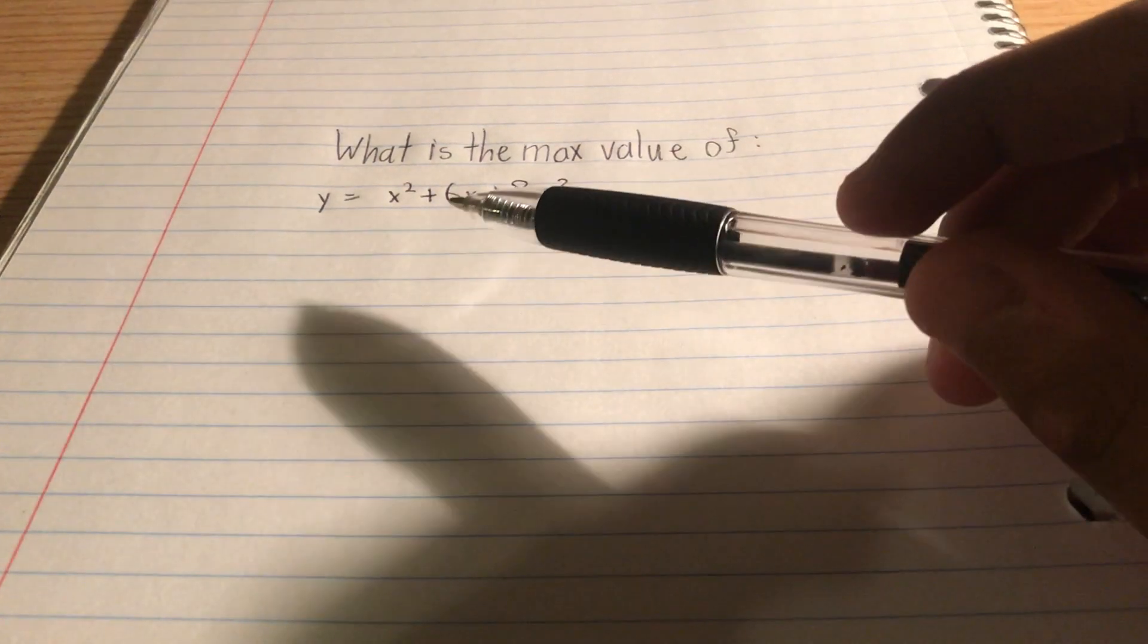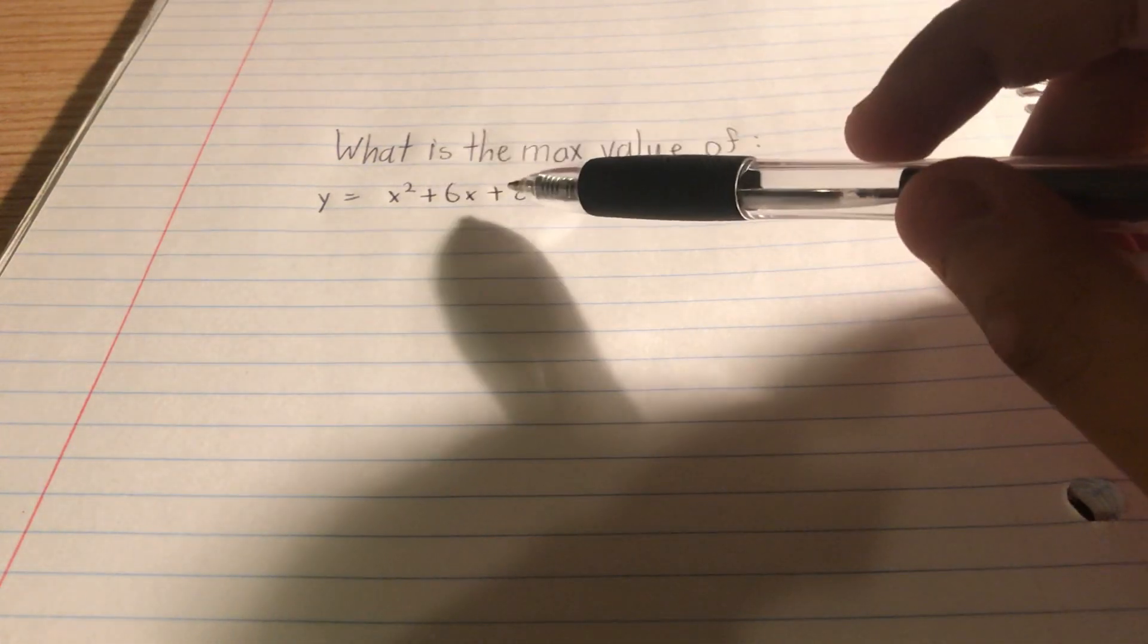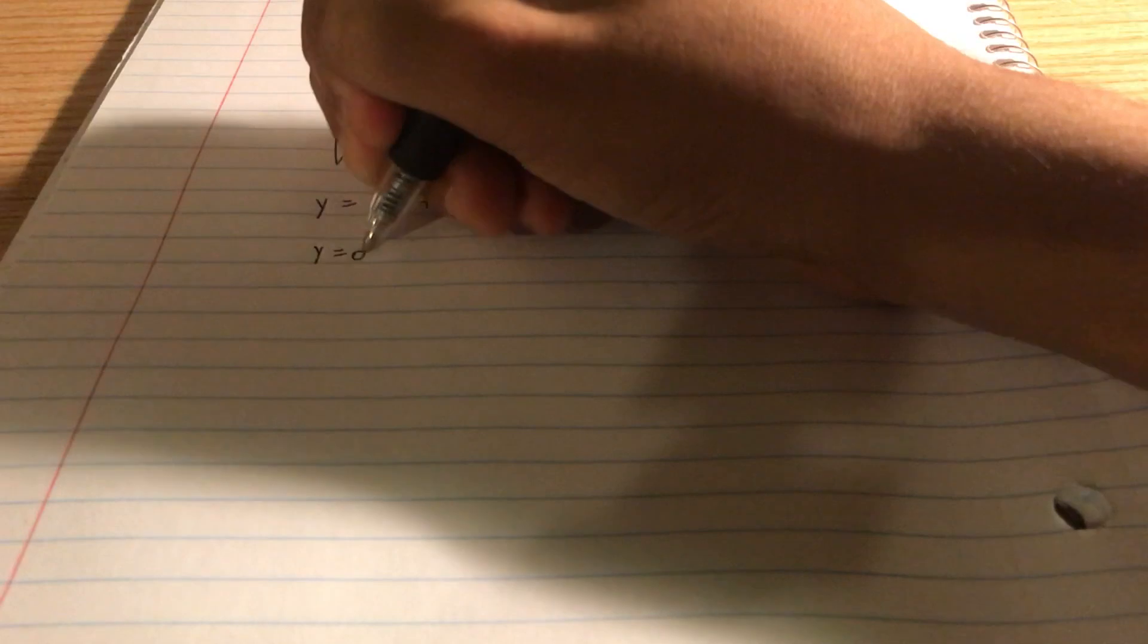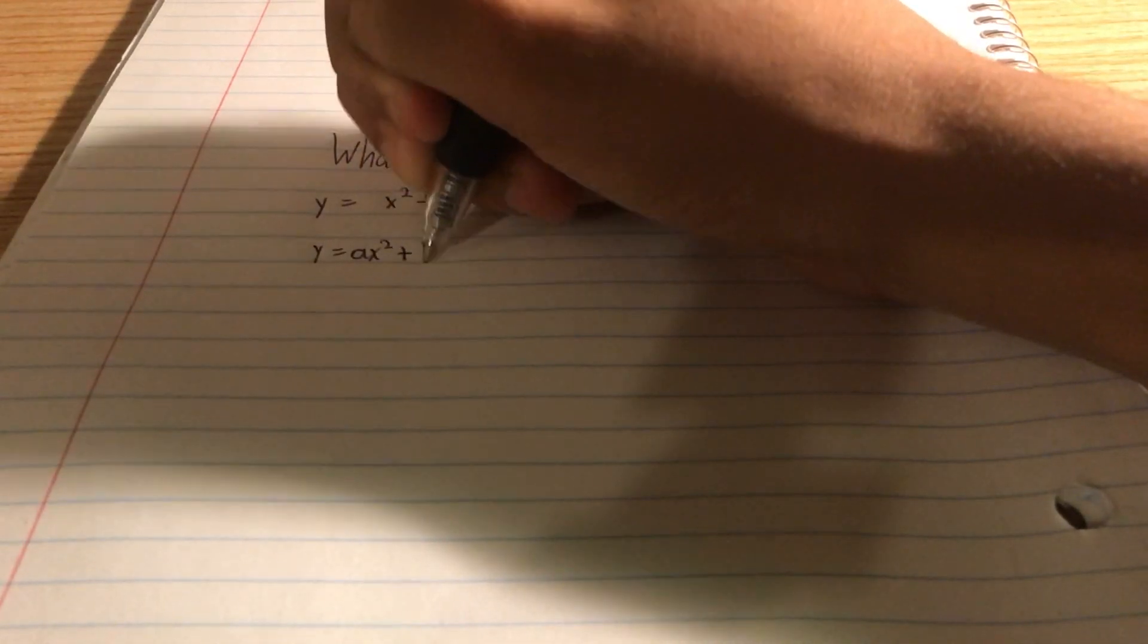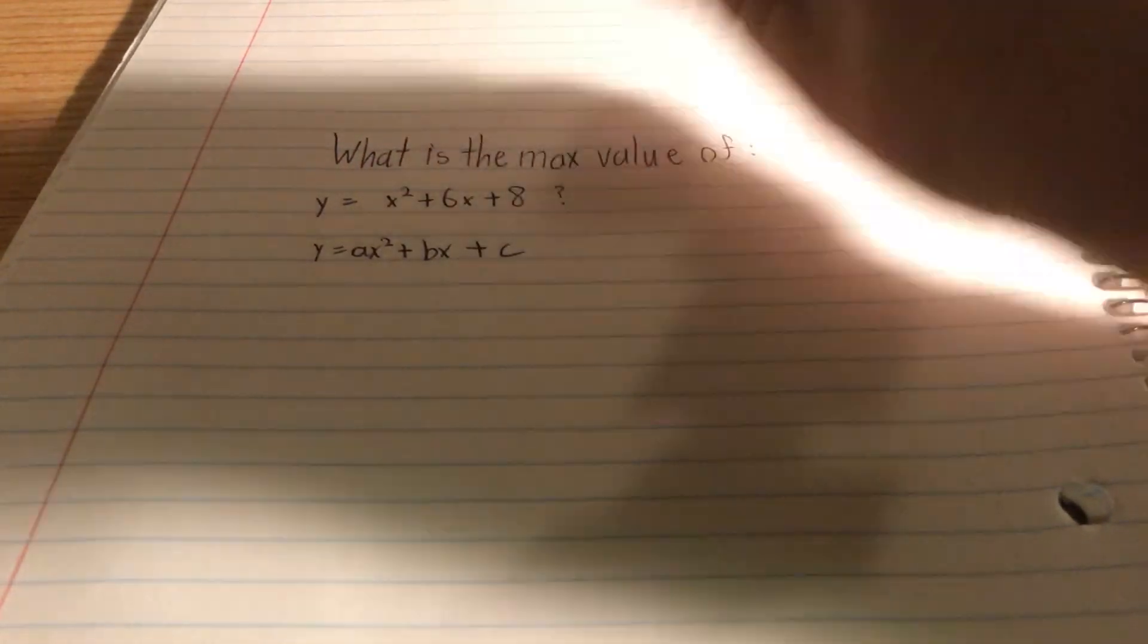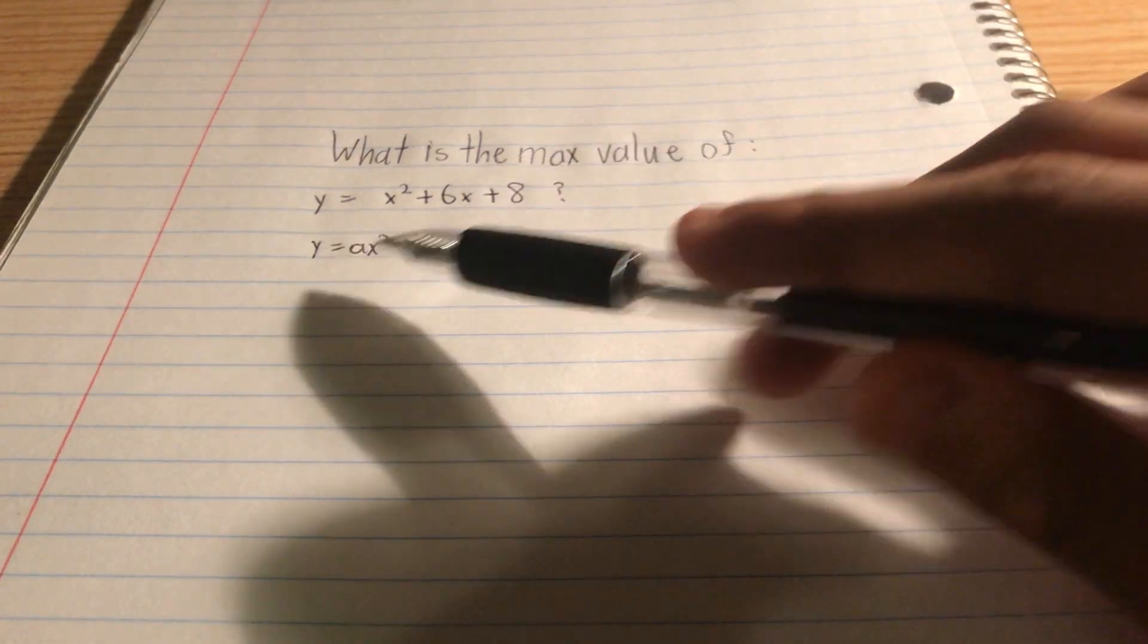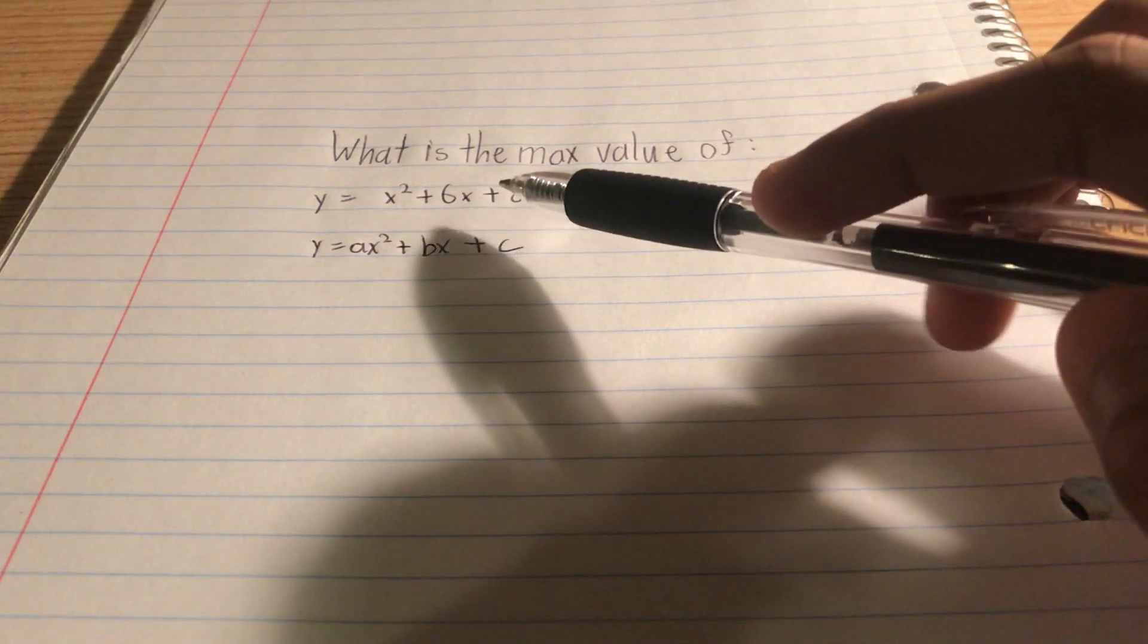We know that the vertex is going to be at negative b over 2a. First I'll write this down. We got y equals ax squared plus bx plus c. We know this, so all we have to do is correlate these a, b, and c values with this function right here.